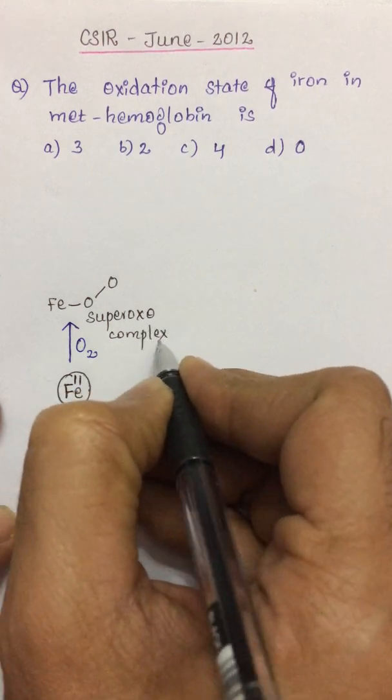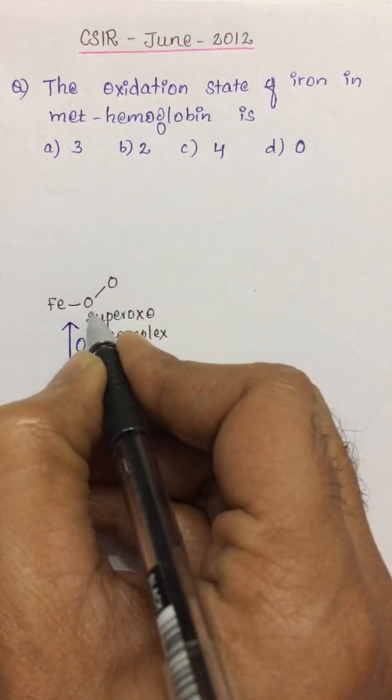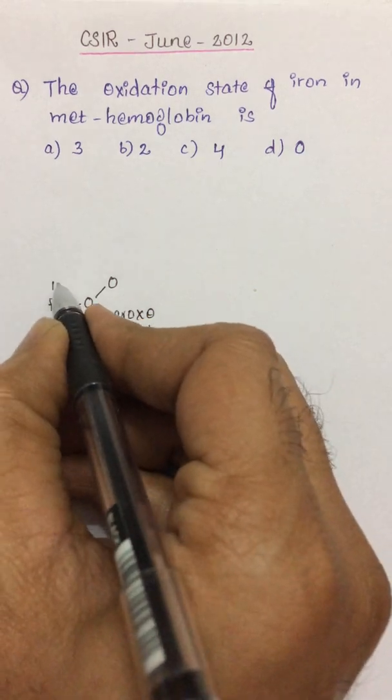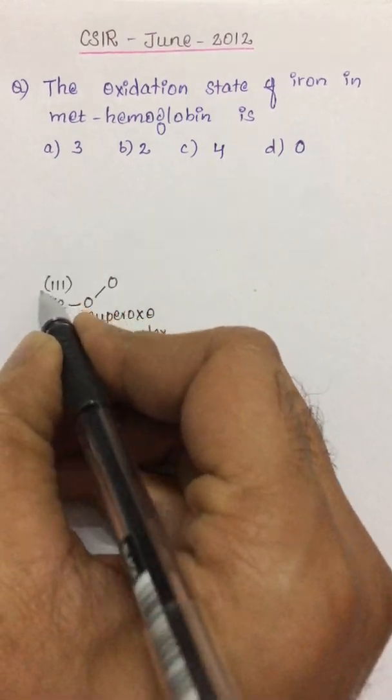So the name itself gives an idea that the dioxygen will take up a superoxo form and the oxidation state of iron is converted to +3.